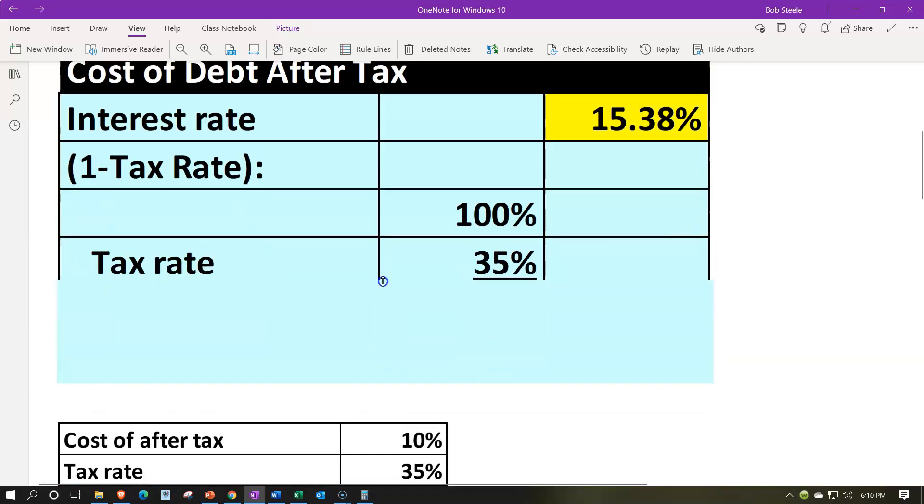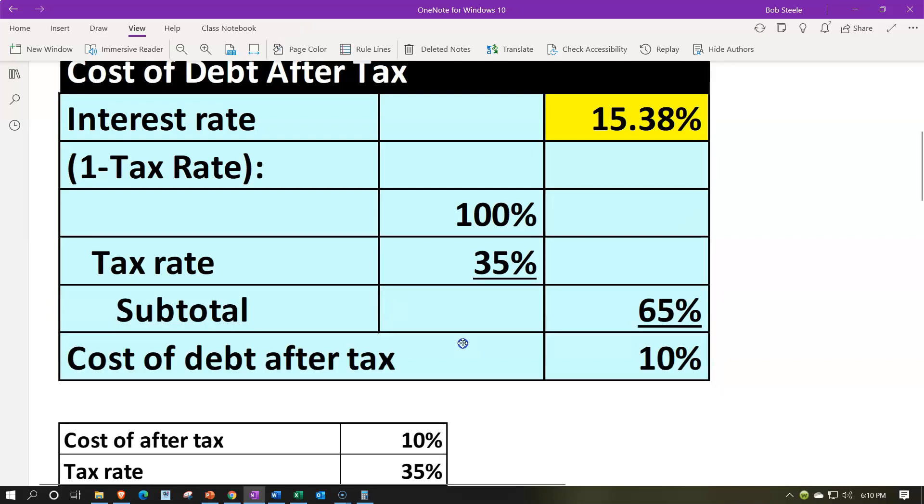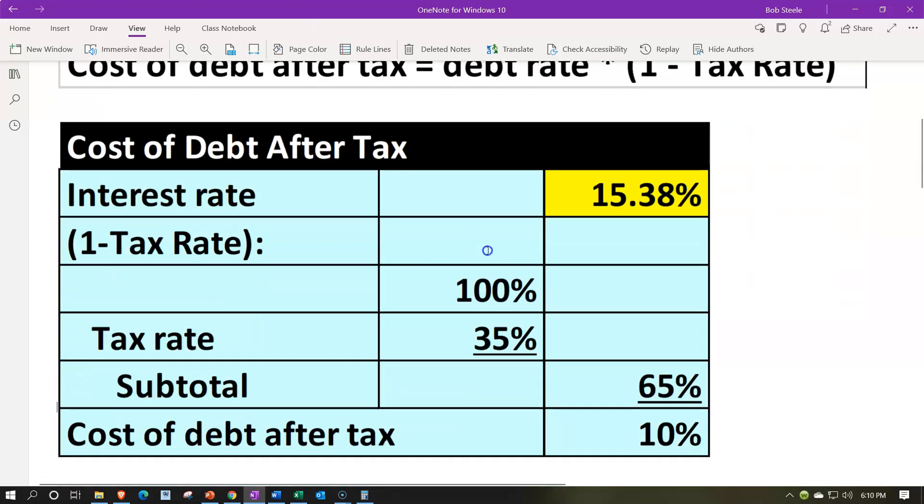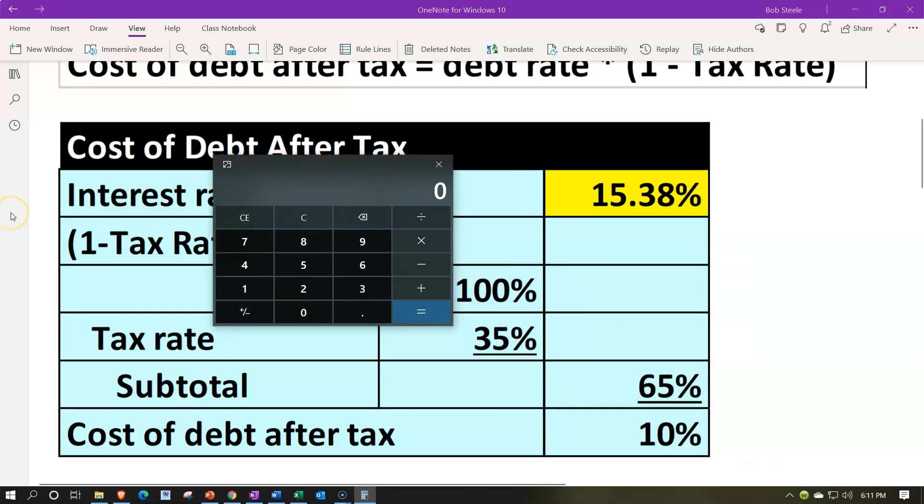And then we got one minus the tax rate. So we got 100% or one minus the tax rate, which is 35% or 0.35, the difference being 65%. And so then we know the end result is the 10%. Normally then we would be taking the 15.38 times the 65. If I do this backwards, basically, now I know the 10%. I know the 65 in this case, I'm trying to back into the 15%. We would be 15.38%. We would be taking then the 0.1 divided by the 0.65 and that's going to give us our 0.1538 or 15.38%. You can then double check it by taking this number 0.1538 times the 0.65 getting back down to the 10% or 0.1.